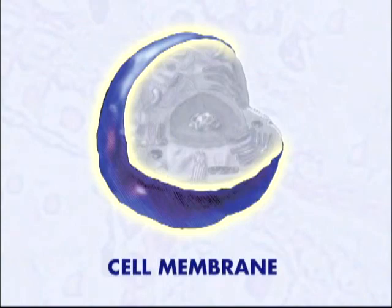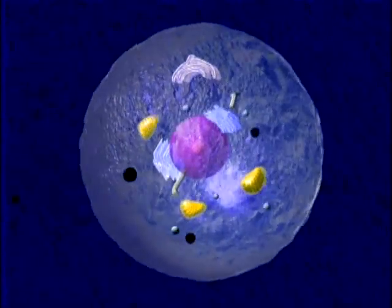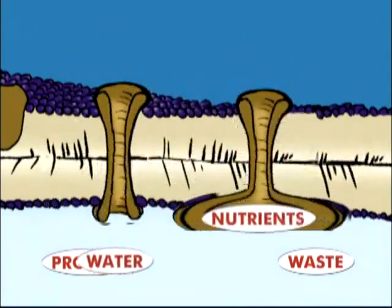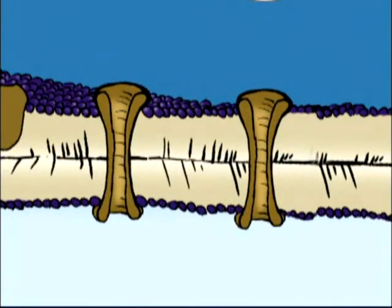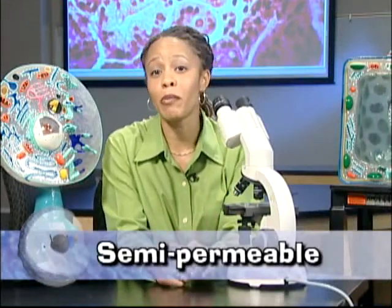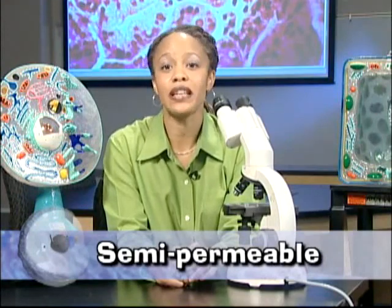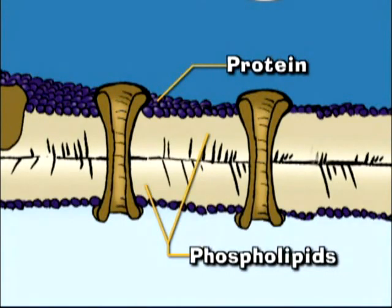Let's begin with the cell membrane. The cell membrane, or plasma membrane, regulates what comes in and what goes out of the cell. It plays an active role in what the cell takes in, like nutrients, or removes, like waste. It's a semi-permeable membrane, which means it can control the rate at which substances enter or leave, depending on the needs of the cell.